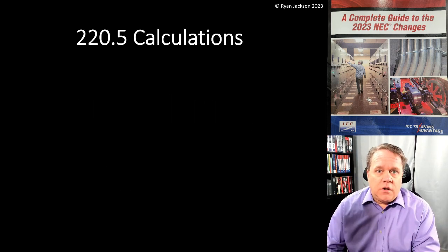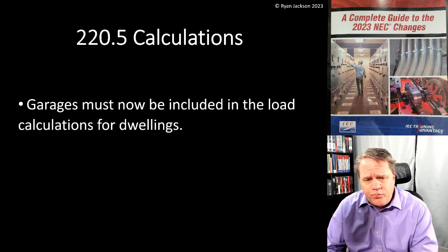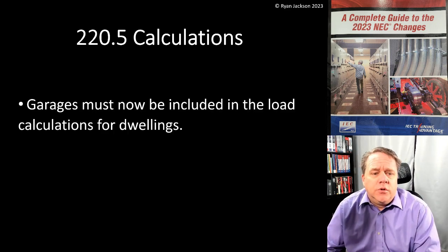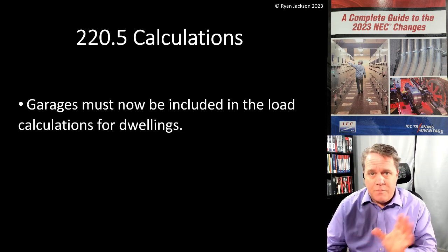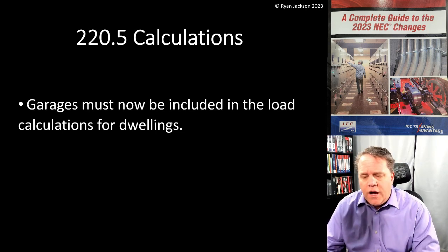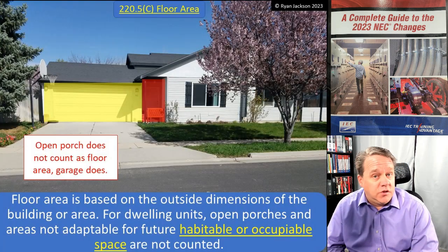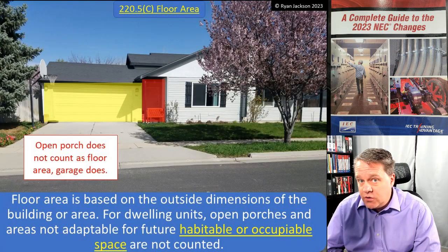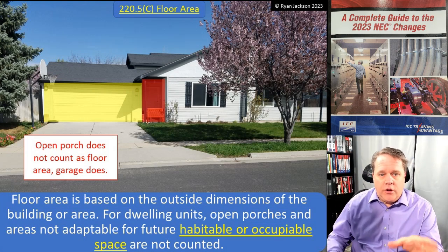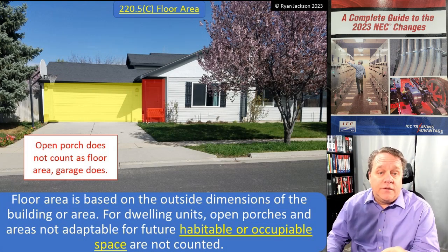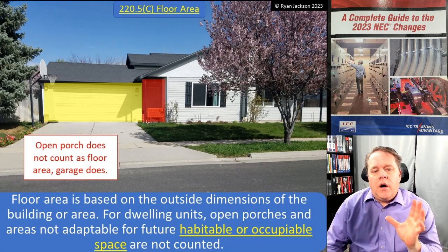Getting into the technical stuff: 220.5 — garages must now be included in the load calculation for dwellings. Now that's the way I phrase it, but you could argue that this change actually reduces the load calculation instead of increases it. When we're calculating floor area under 220.5(C) — this used to be in 220.11 — floor area is based on the outside dimensions of the building or area.